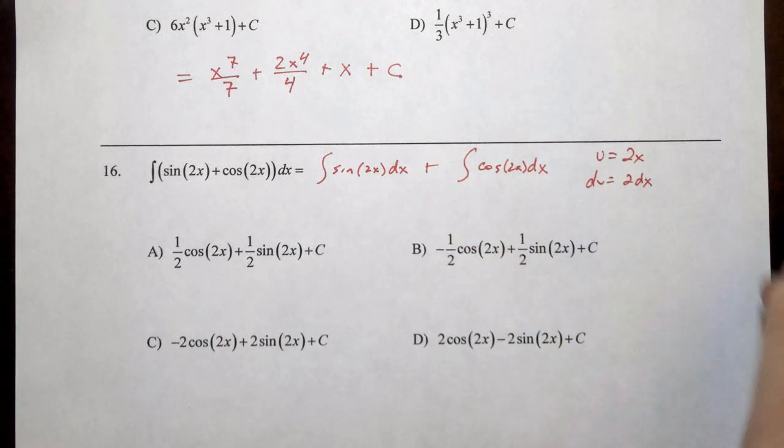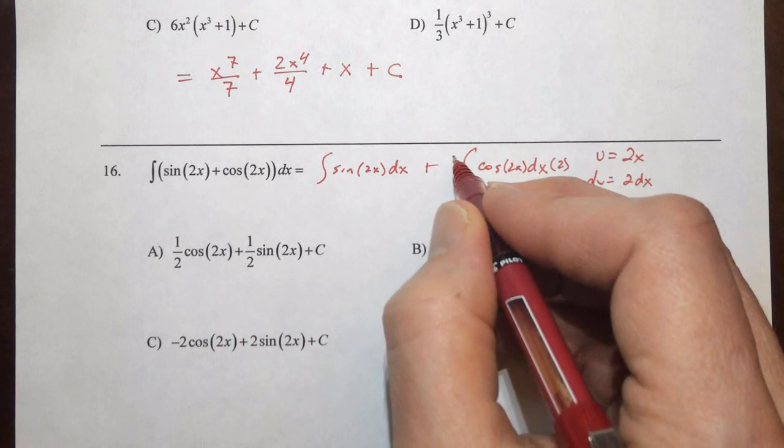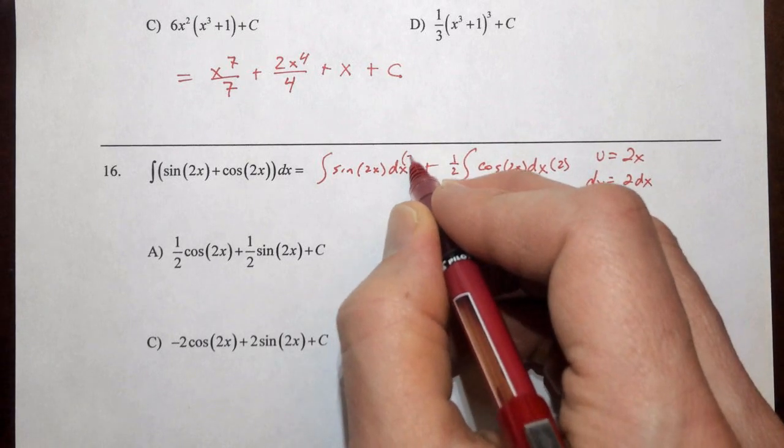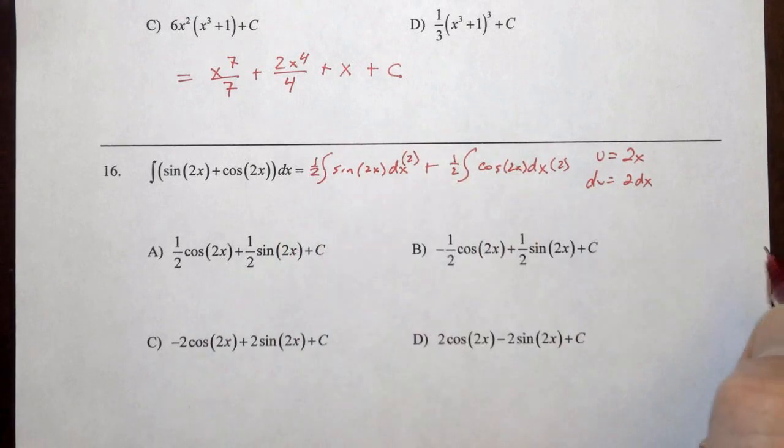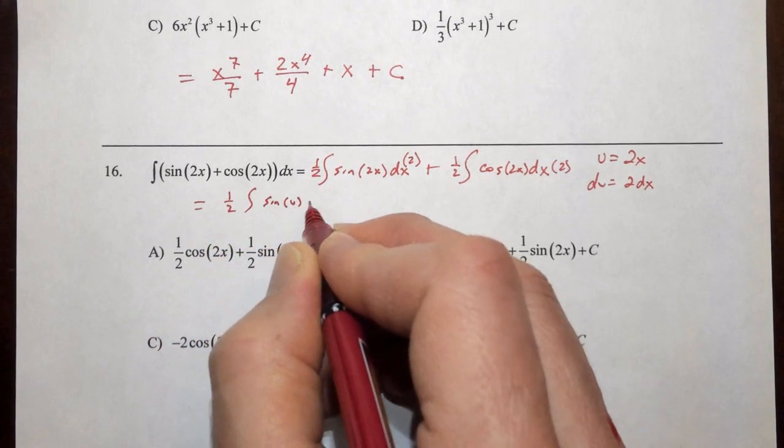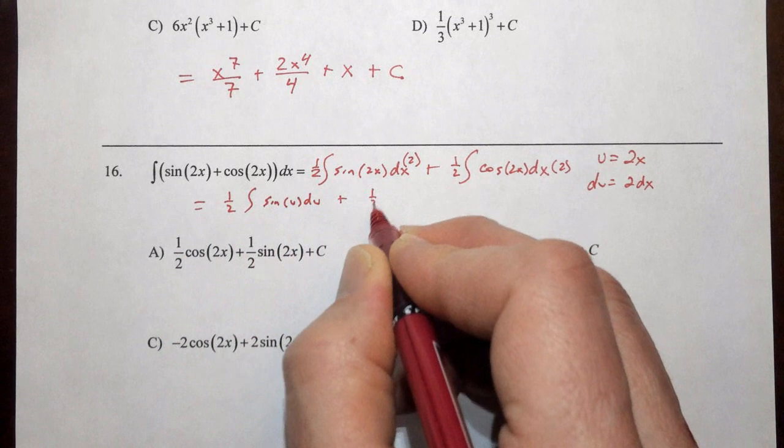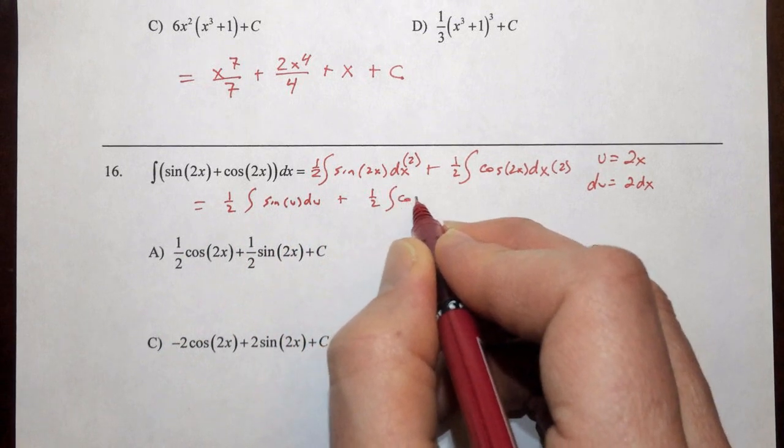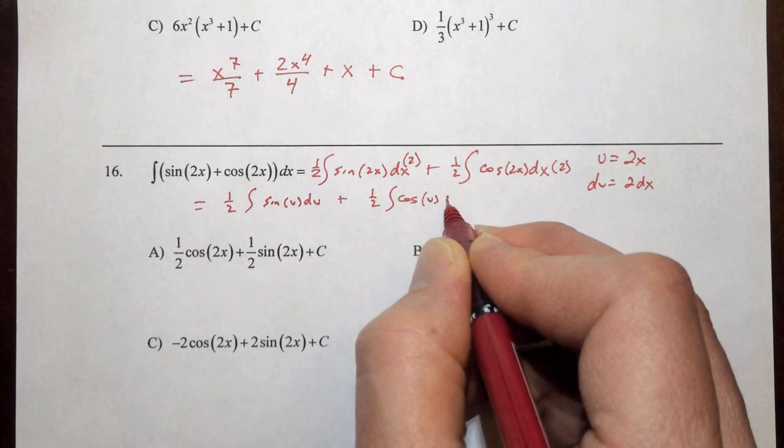just like we did up in the top of the page. In both cases, we need a 2 and a 1 half in order to counterbalance it. So we end up having 1 half the antiderivative of the sine of u du plus 1 half of the antiderivative of the cosine of u du.